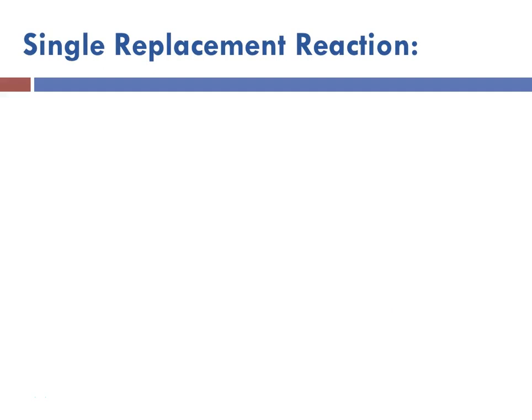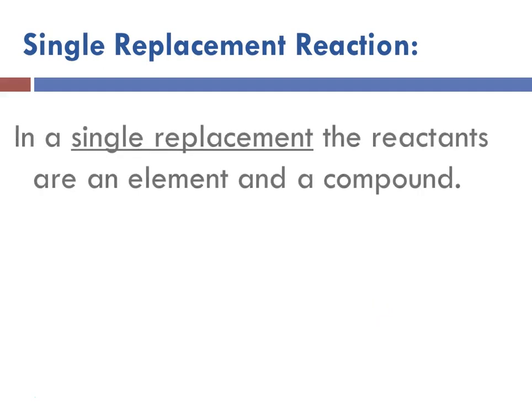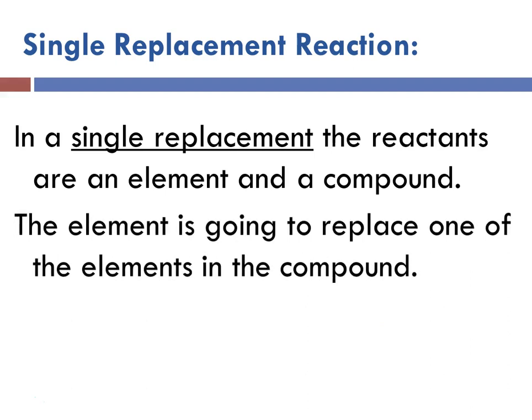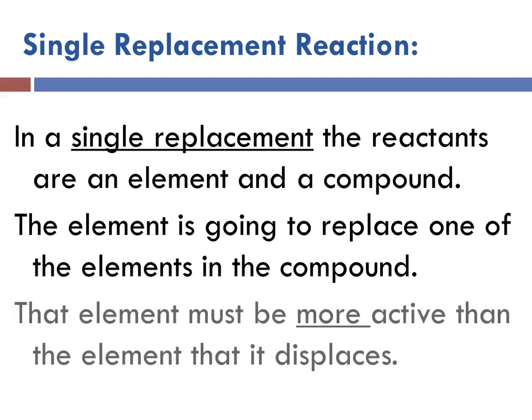Let's recall what a single replacement reaction is: the reactants are an element and a compound. The first step is always classifying — element plus compound means this must be a single replacement. The element is going to replace one of the elements in the compound, but only if it is more active than the element it is trying to displace.